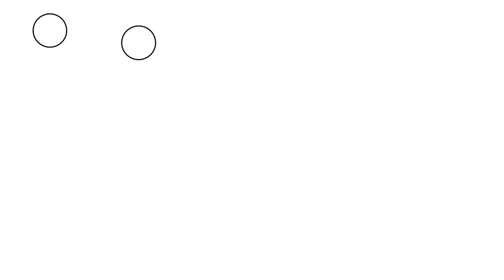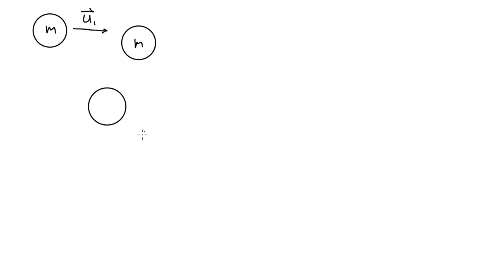So there's the cue ball and it's going to strike something else — say it's the eight ball. It comes in at an angle, and its initial velocity is u1. Both balls have a mass of m. Afterwards they're going to break and go off in different directions, and we want to prove something about those directions.